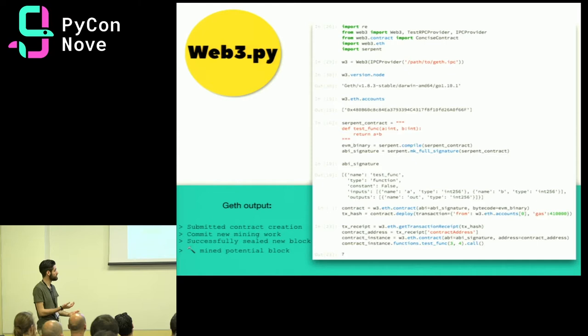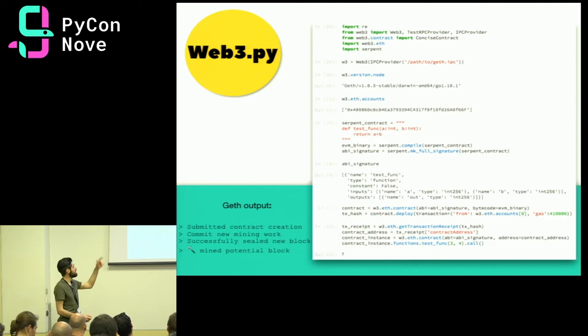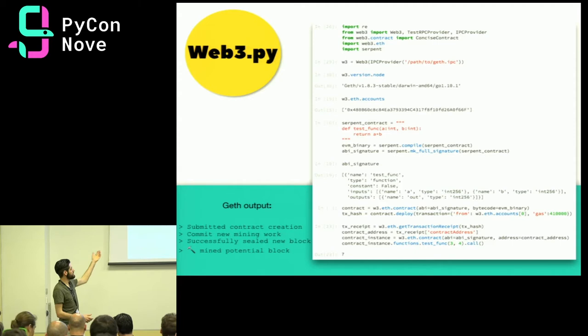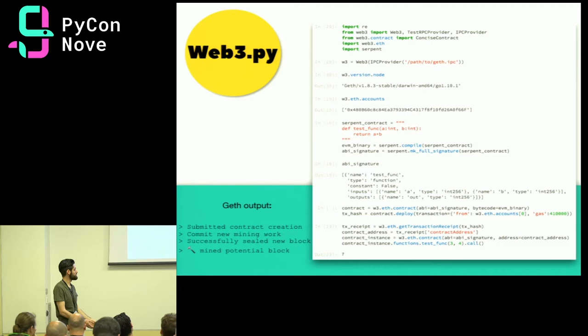Once you have your node running, you might want to connect to it — send JSON-RPC requests to the node. For this, there's Web3.py, which with just a few lines of code lets you connect to the local node using an IPC provider. Otherwise you could use an HTTP provider with an IP address to connect to a public peer node. Just as in the testing case, you have some Serpent code, you can compile it, and using the contract deploy function, deploy the contract on the blockchain. Then you can call its methods and test its functionality.